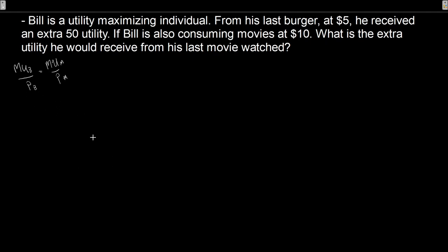From here, let's substitute what we know. The price of a burger is $5, and he received an extra 50 utility from the last burger consumed — that's the marginal utility. The extra utility received from the last unit: consumed an extra burger, got an extra 50 satisfaction. If Bill is utility maximizing, what then is the marginal utility of movies? We have everything but this one unknown, so we can do some algebra, some cross multiplication, to find our answer.